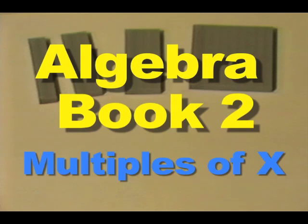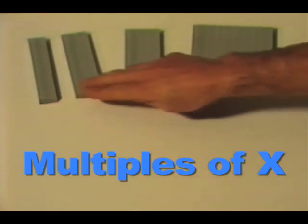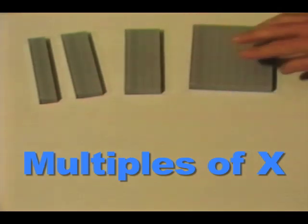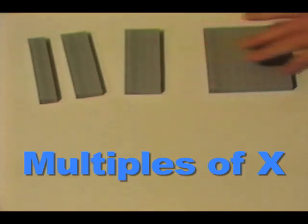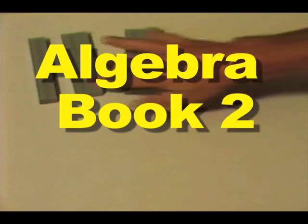Here you can see that we can get x's in multiples of two x's, three x's, four x's, five, six, seven, eight, up to nine x's. Let's look at a problem in book two and see how this is done.